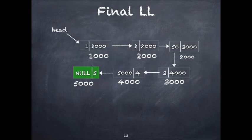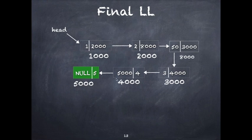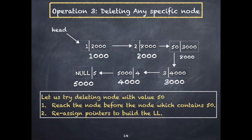The final linked list after deletion of the last node is confirmed. The time complexity of all these steps for deleting the last node is O(n), because we only have the head pointer and must traverse all nodes to reach the last one. If there were a tail pointer, a different logic would apply.